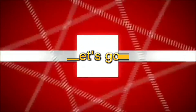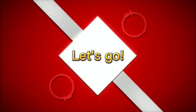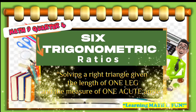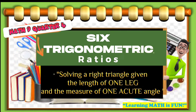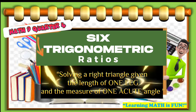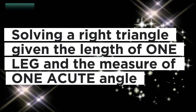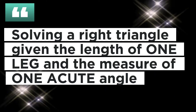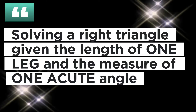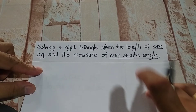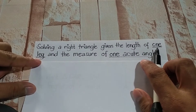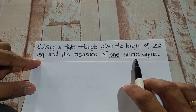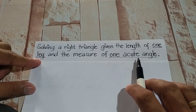Math time! Hello everyone! Today we're going to talk about the six trigonometric ratios — solving a right triangle given the length of one leg and the measure of one acute angle.